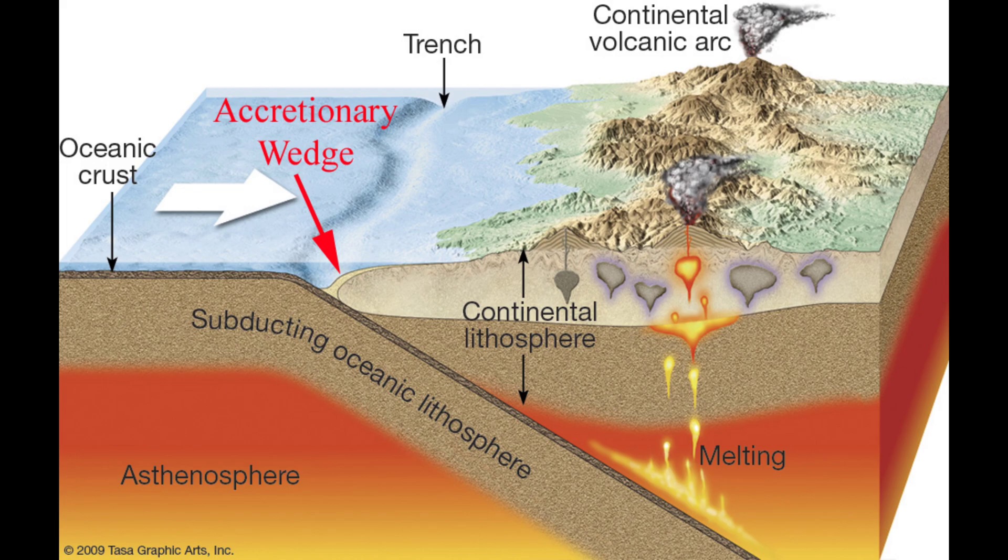Divergent margins form where the plates are moving apart, convergent margins form where the plates are moving toward each other, and transform or strike-slip margins form where the plates are sliding past each other.